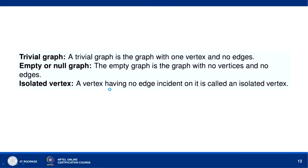A trivial graph is a graph with 1 vertex and no edges. The empty graph is the graph with no vertices and no edges. An isolated vertex is a vertex having no edge incident on it.